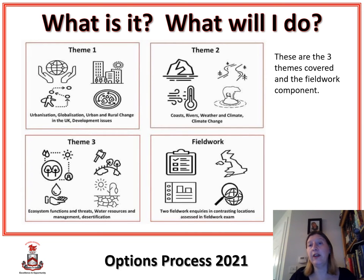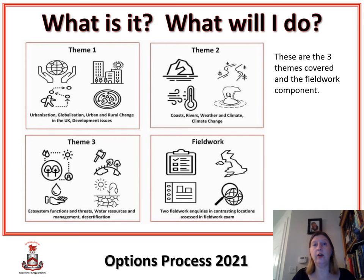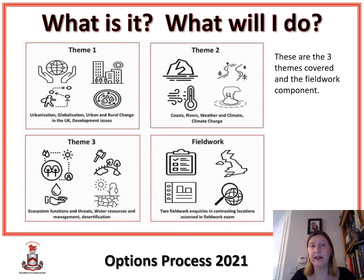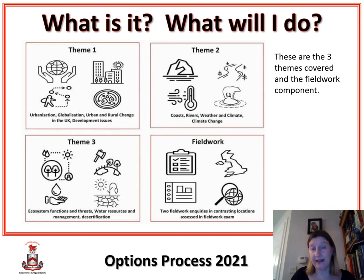We cover three themes. Theme one is our human geography — we look at things like urbanization, globalization, urban and rural differences and change. We look at development issues: what it's like to live in countries that are low income rather than just our own high income countries, and how we can help those countries to develop.